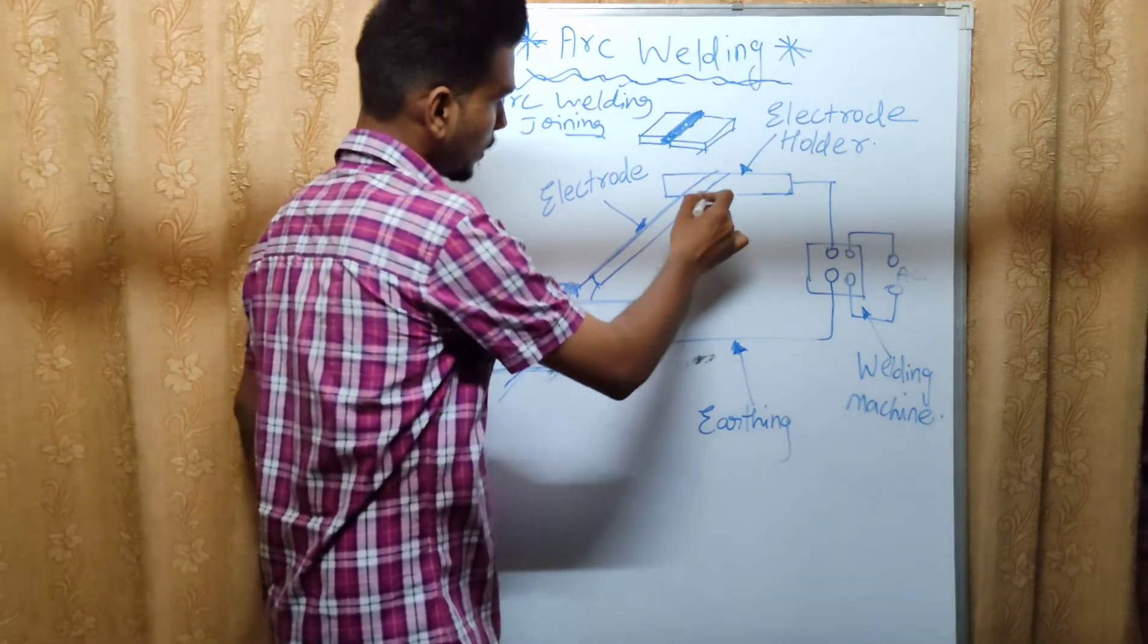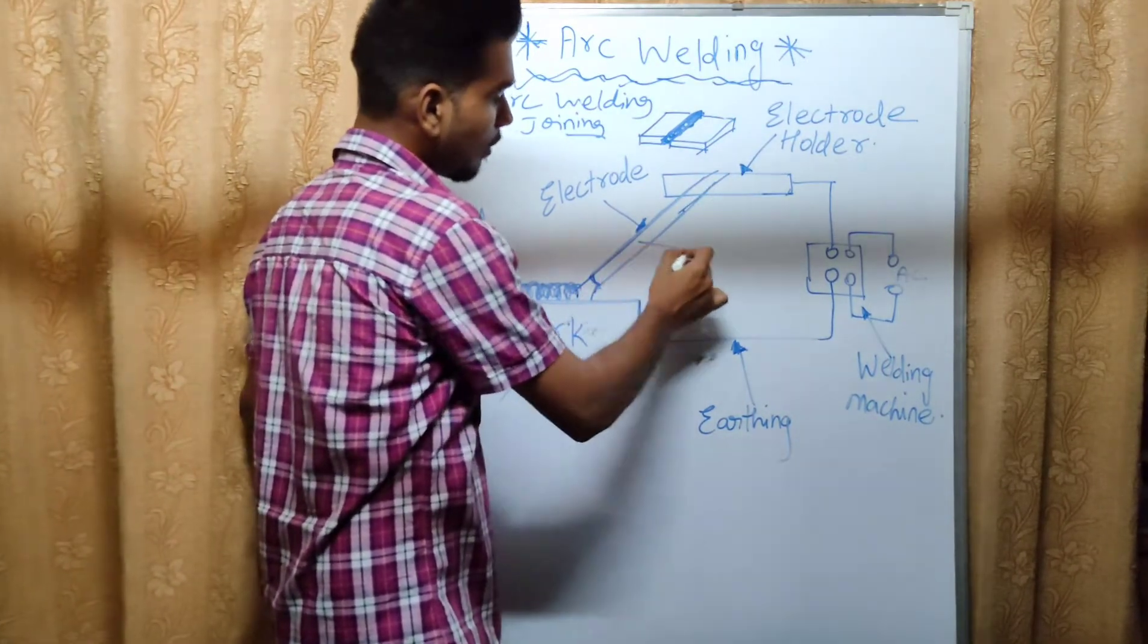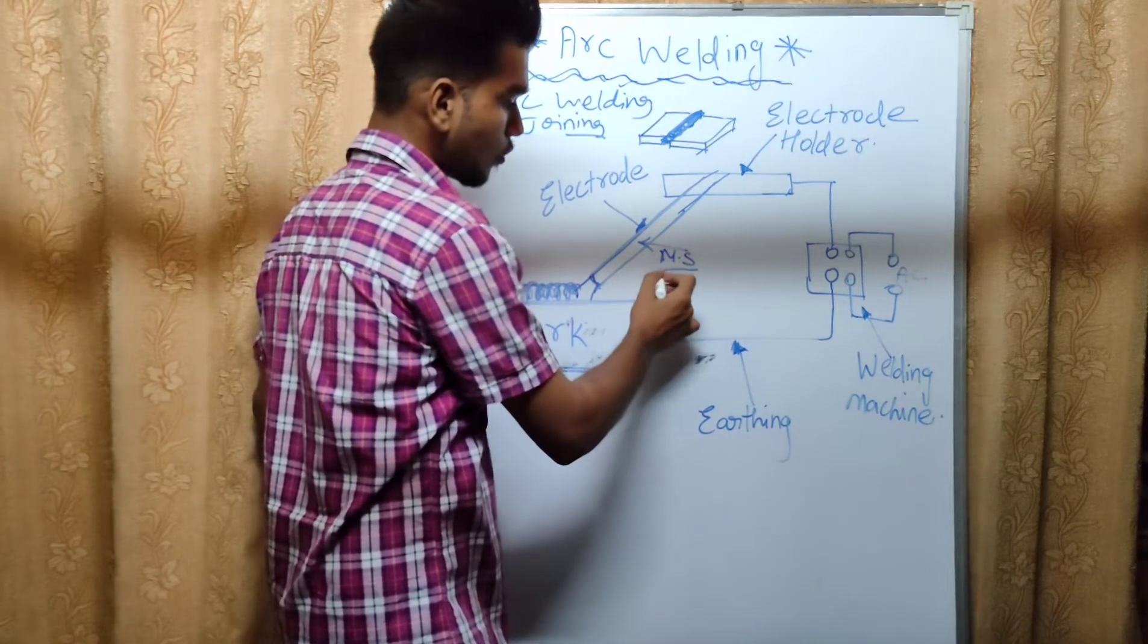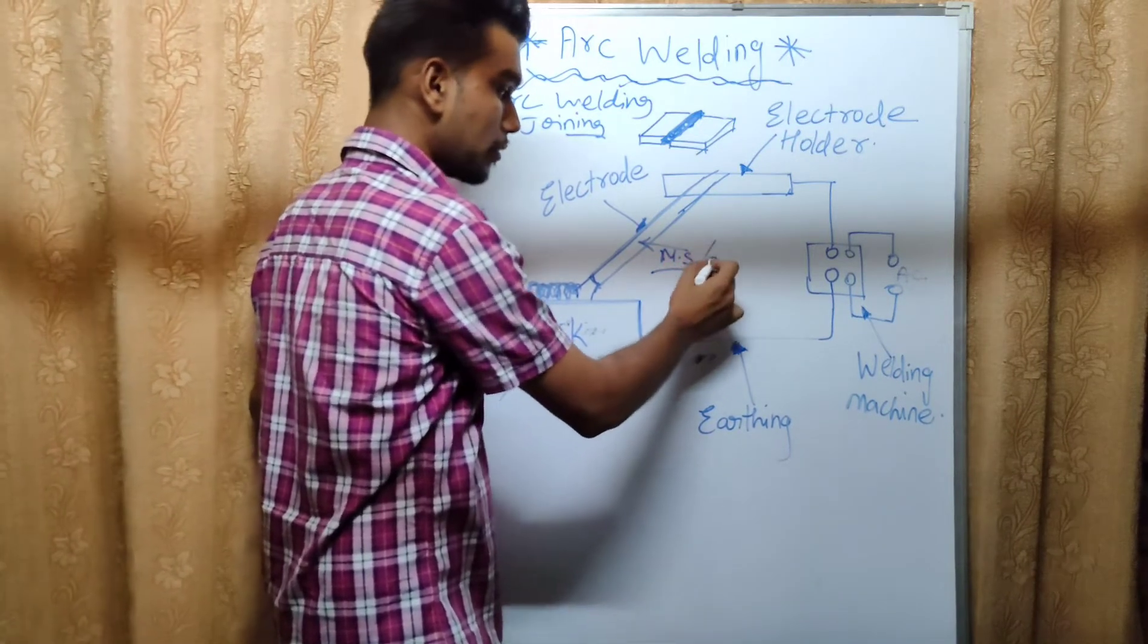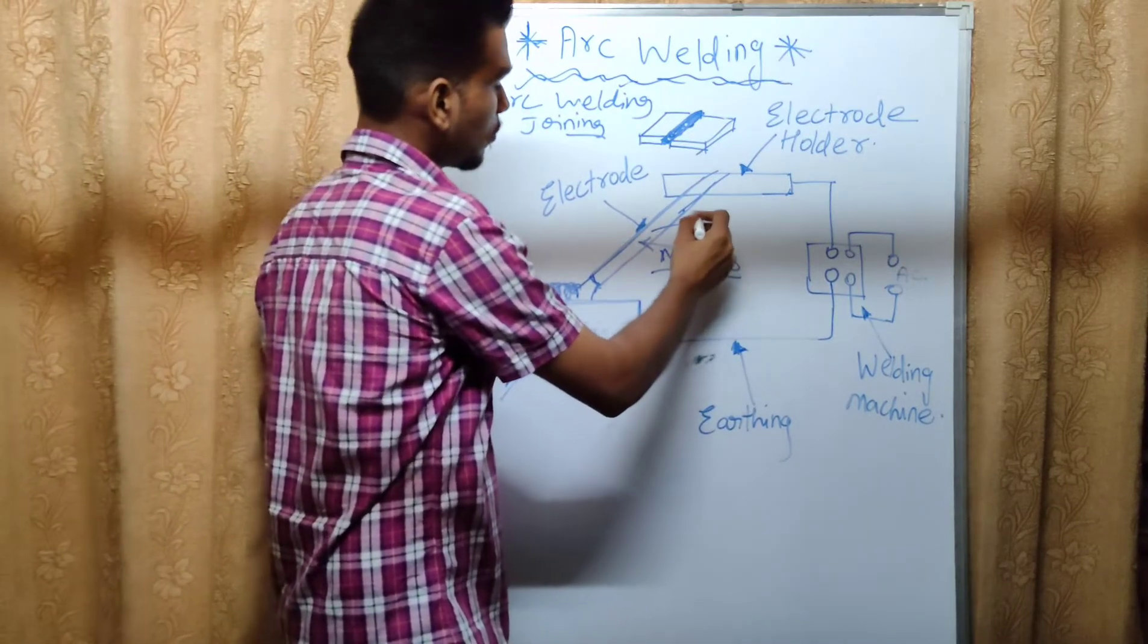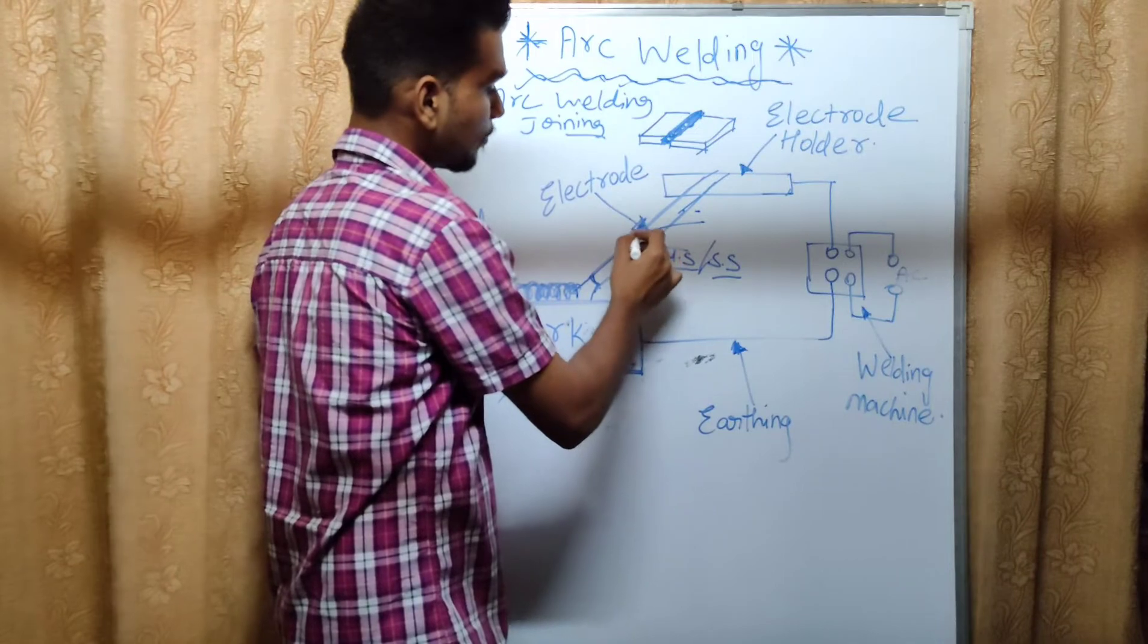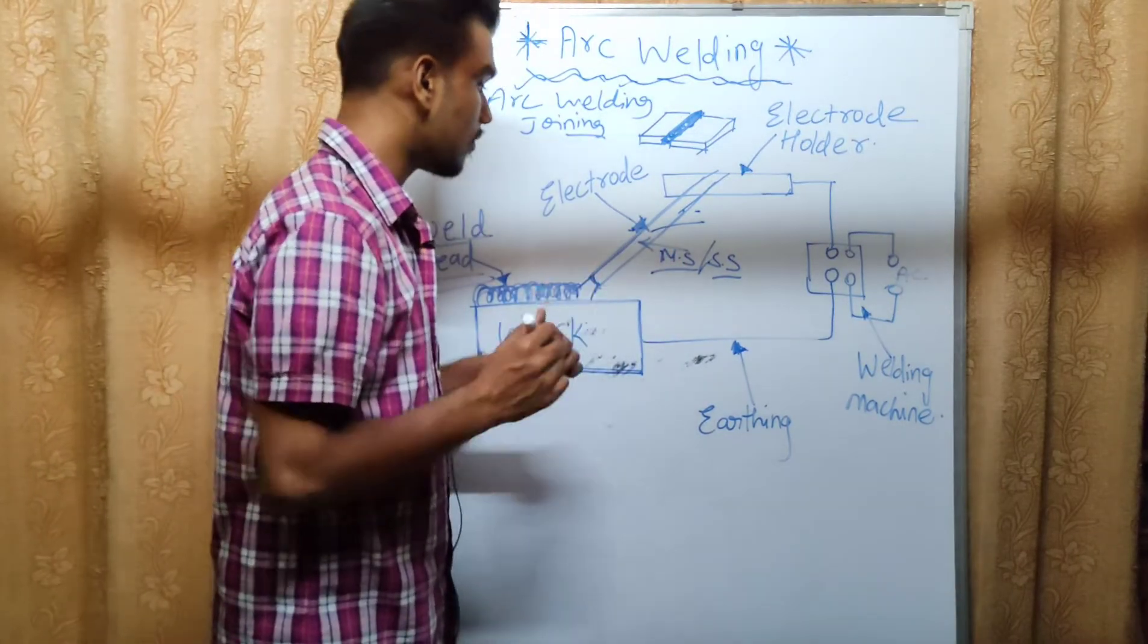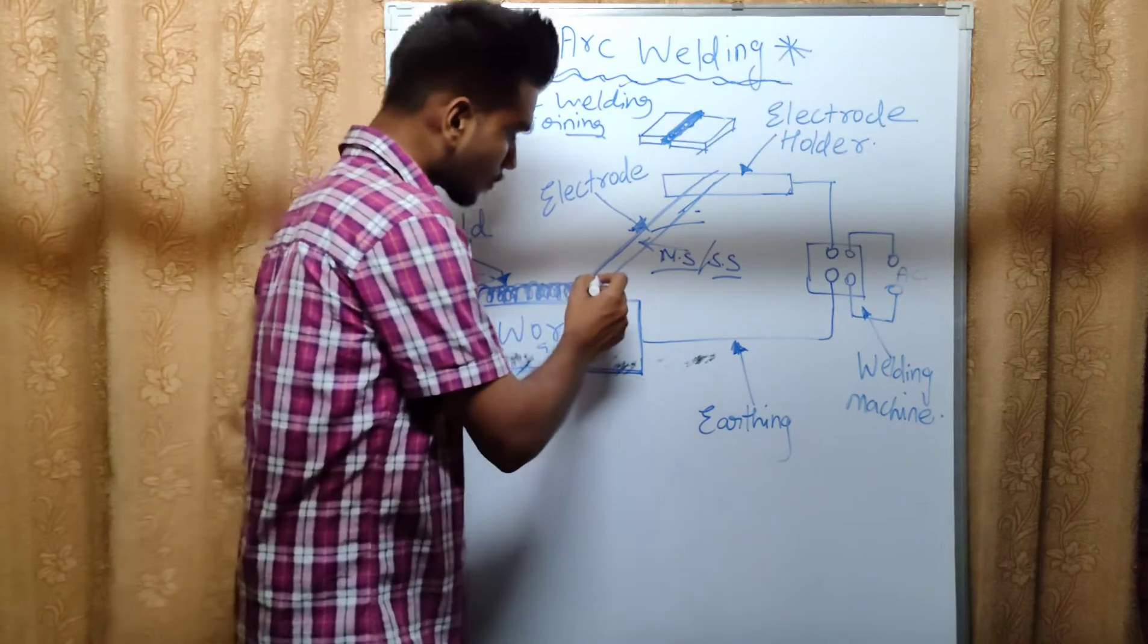This is the electrode rod here. There is flux here. We can say MS rod, SS rod - two types of electrode rods. The electrode has flux coating on it.